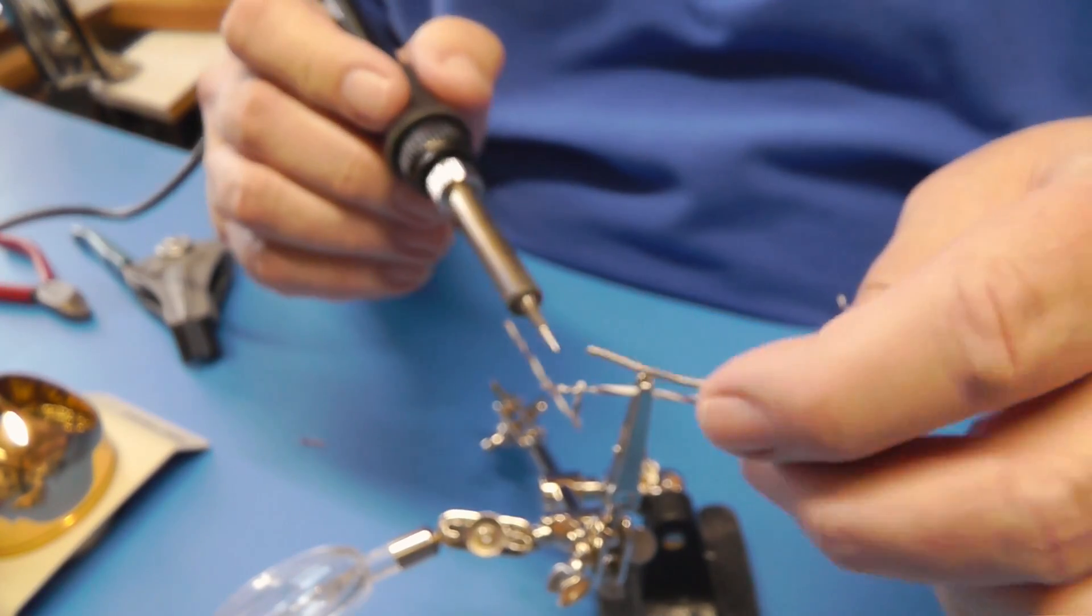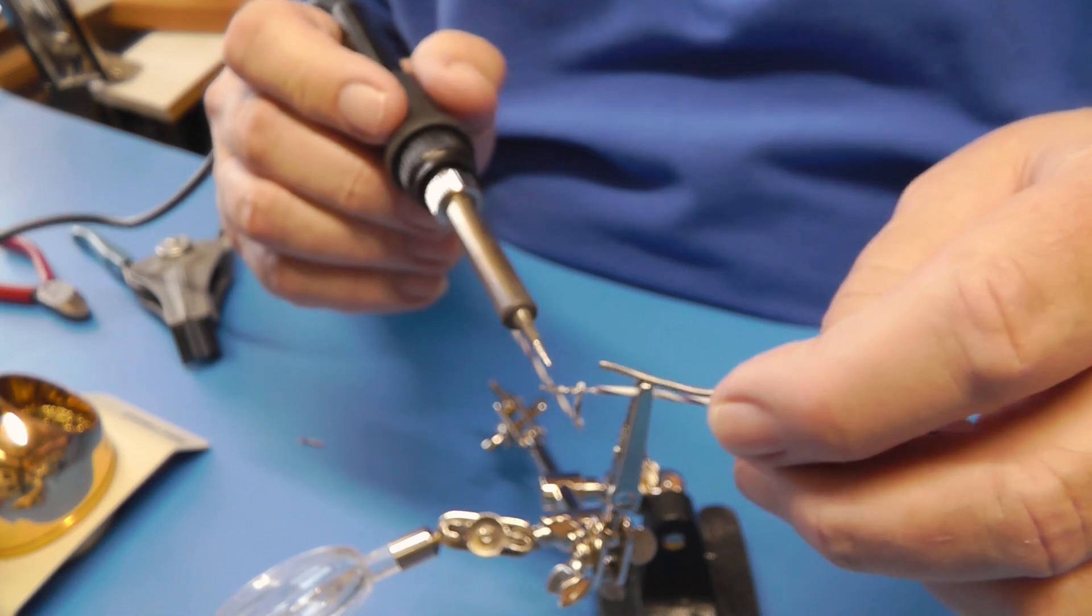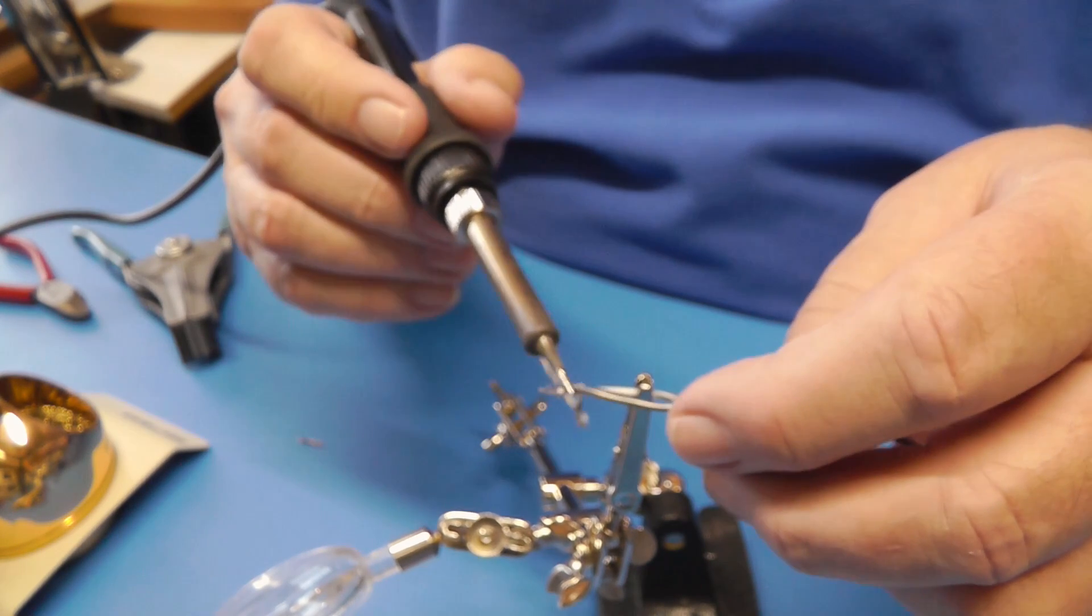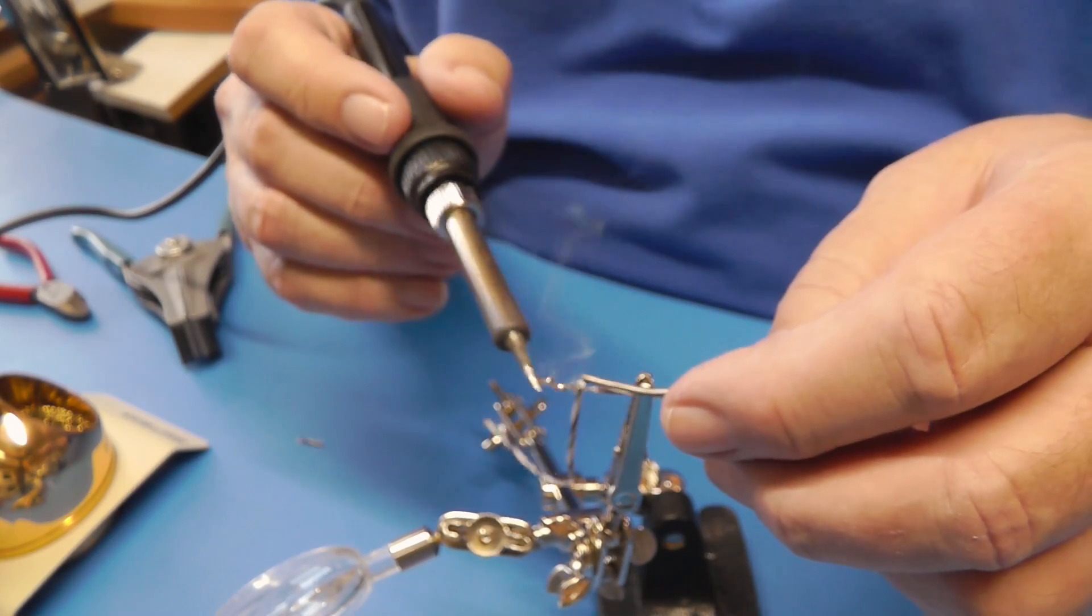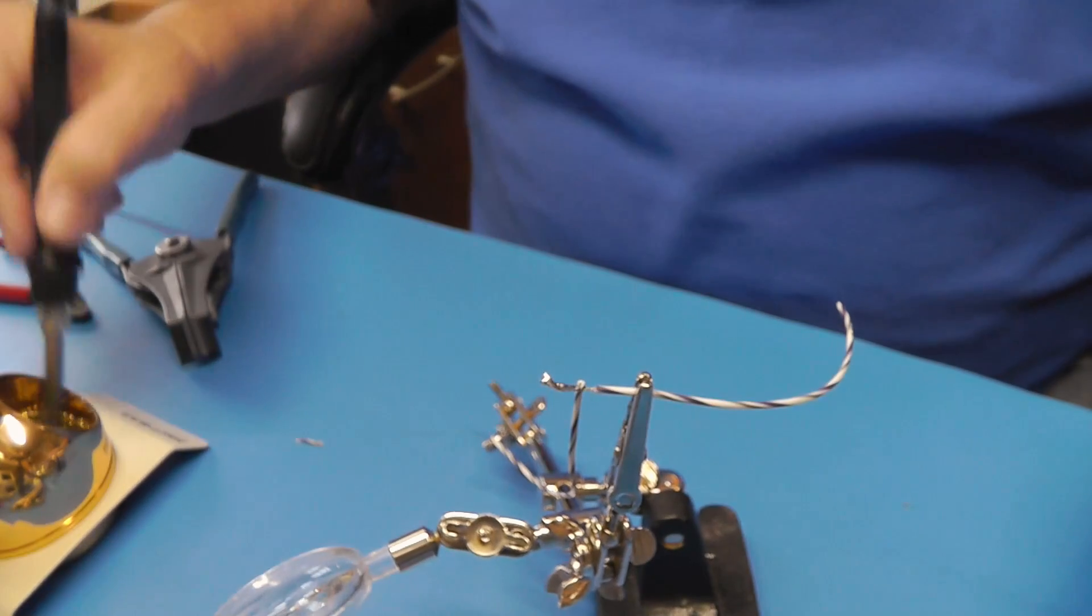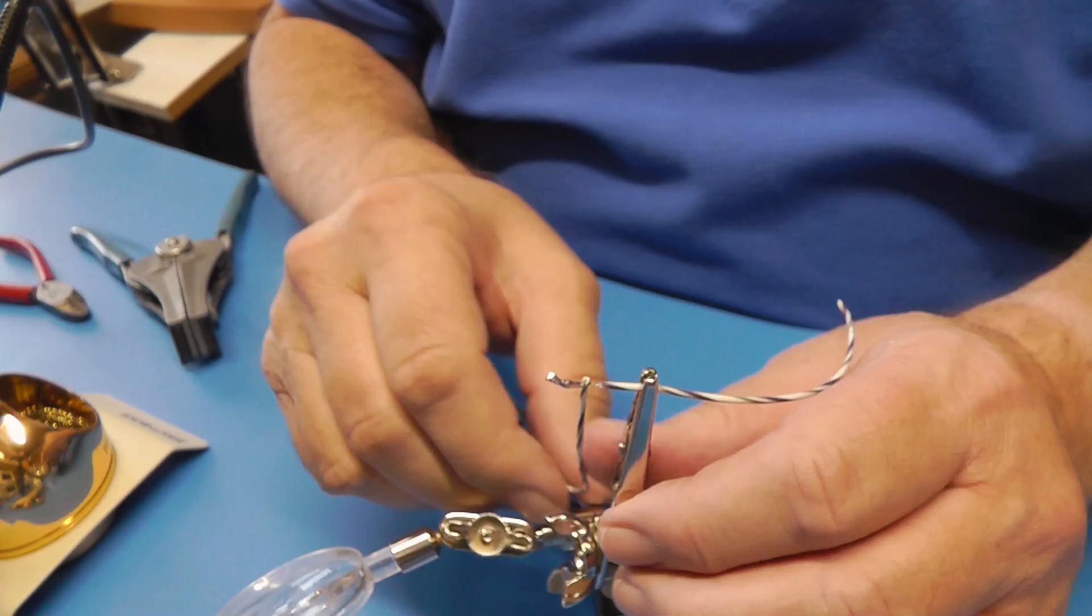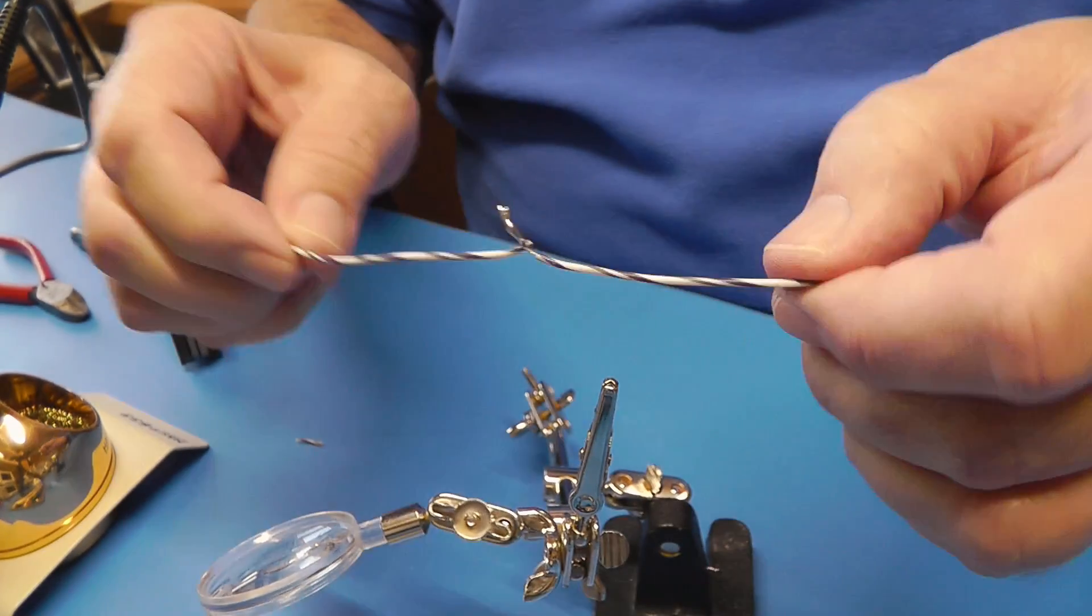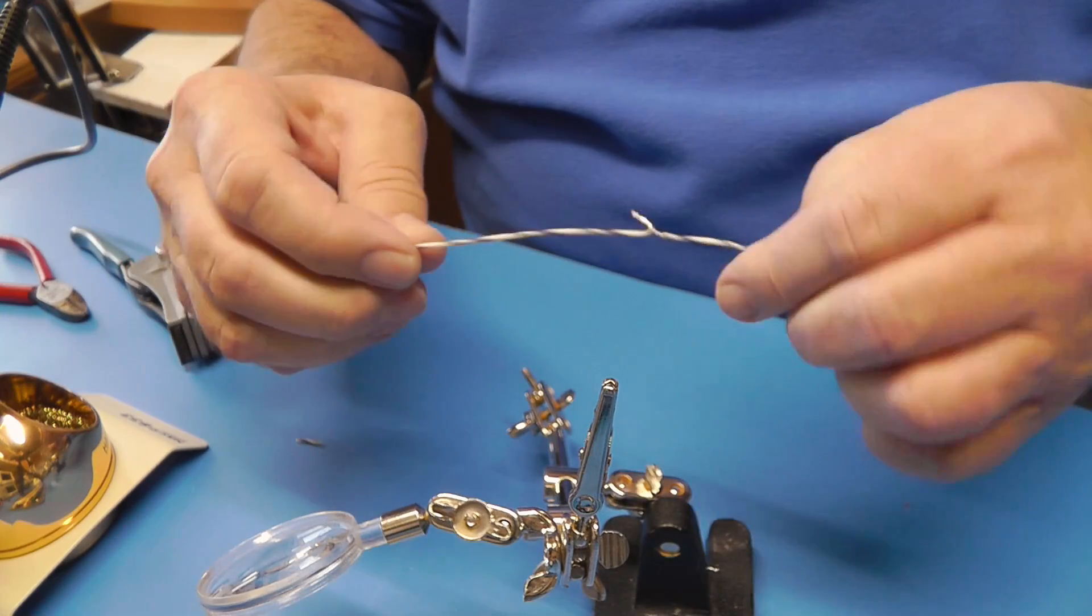So what we're going to do is apply the heat to the joint at the same time we apply the solder. It heats very easily. And it is now soldered. Now that's hot. And I wouldn't touch that. That's not going to pull apart. Okay.